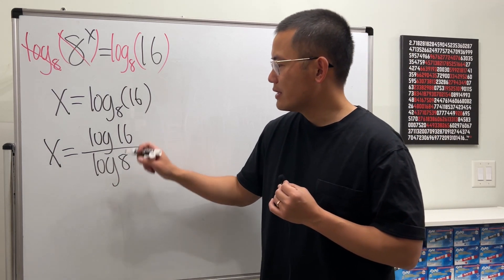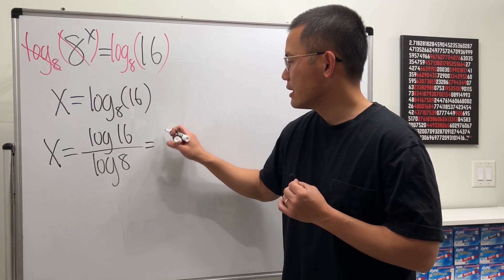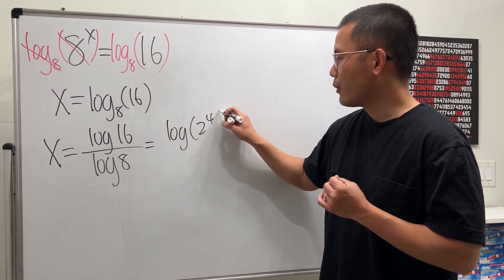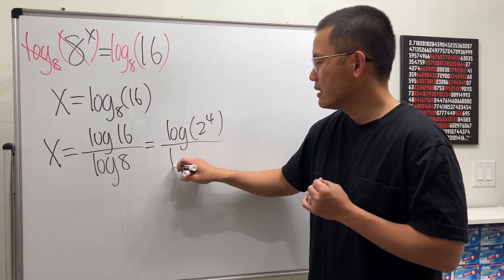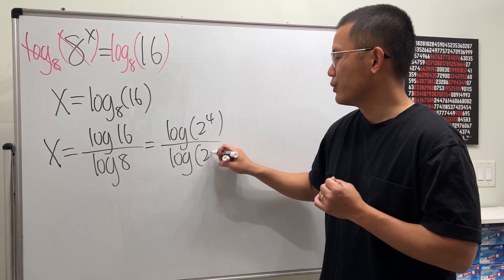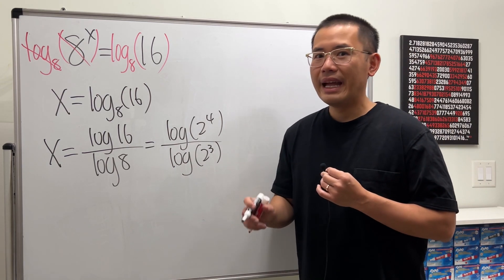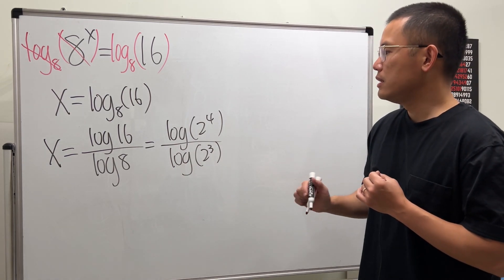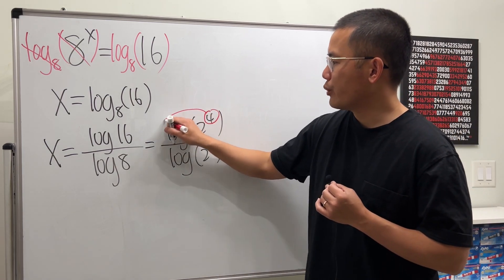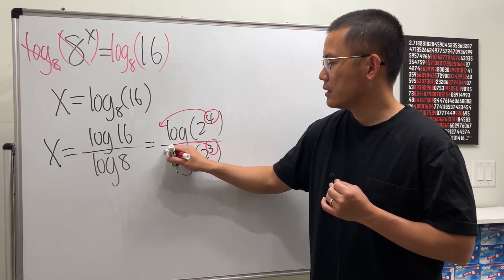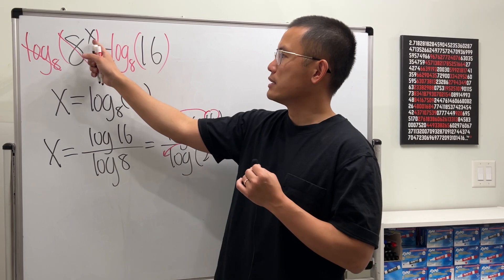And then for the 16, we can look at this as log of 2 to the 4th power, and then for the 8, that's the same as log of 2 to the 3rd power. And then by one of the log properties, we can take the power and then bring that to the front. Like that. And that's exactly what I was saying earlier.